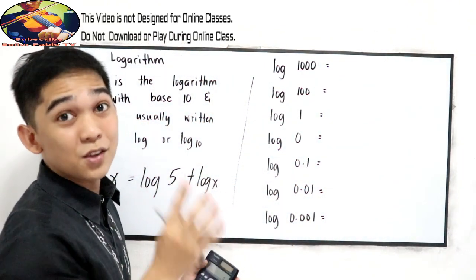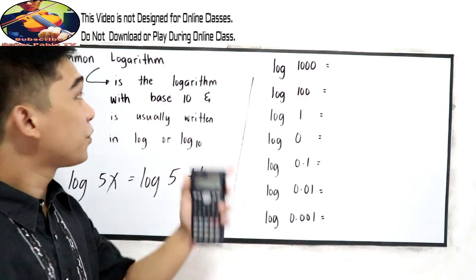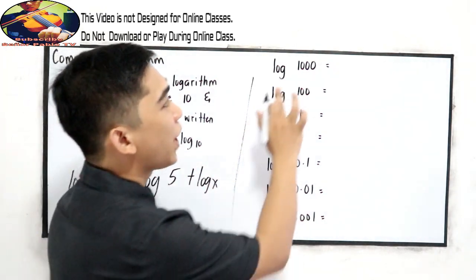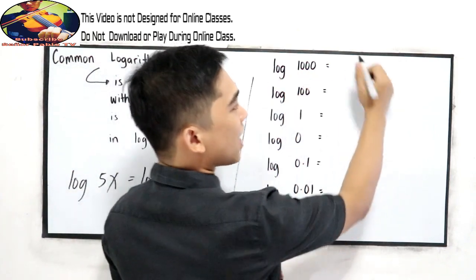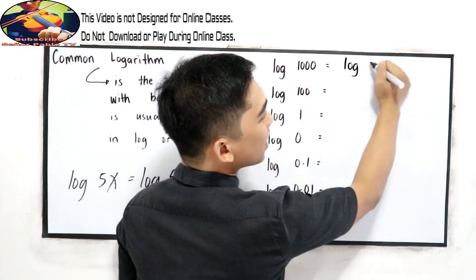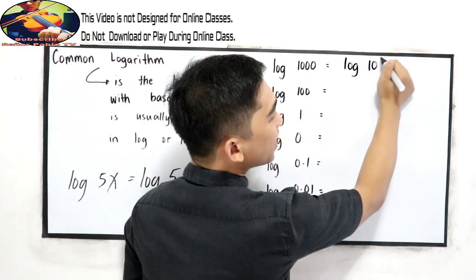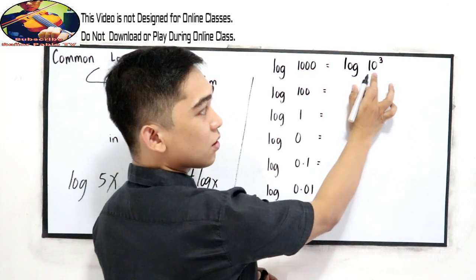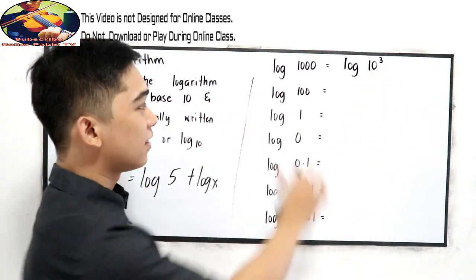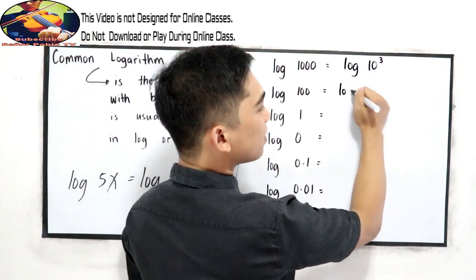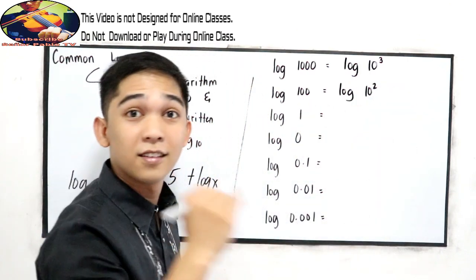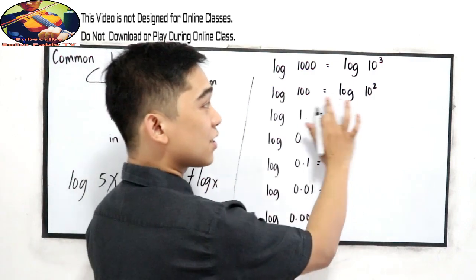Let's say we have this log 1000. Log 1000 is 10 raised to 3, so 10 raised to 3, that is 10 times 10 times 10. Log 100 is 10 squared, 10 times 10, that is 100.